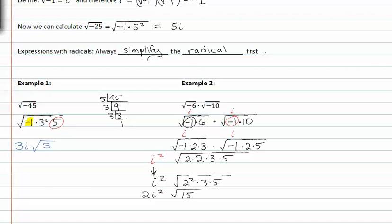When we get to this point, we have to remember that i squared is the same as negative one. And from there, we're left with negative two root fifteen.